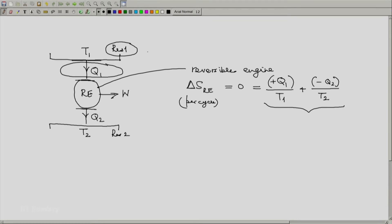Here T is unchanged, so we can write delta S is q absorbed by the reservoir. So hence for reservoir 1, we can write delta S reservoir 1 is heat absorbed by reservoir 1, that would be minus q1 divided by T1.